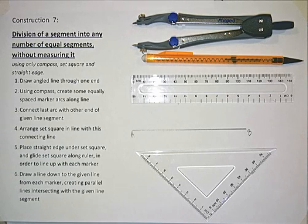Construction 7: Division of a line segment into any number of equal segments without measuring it.